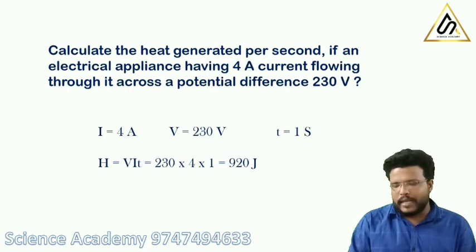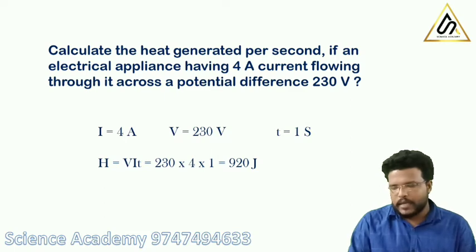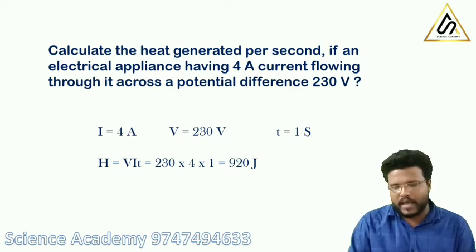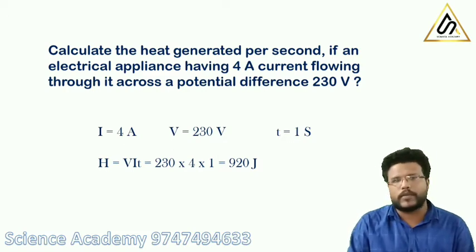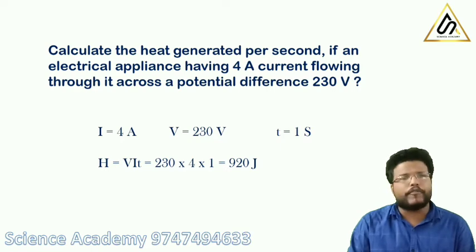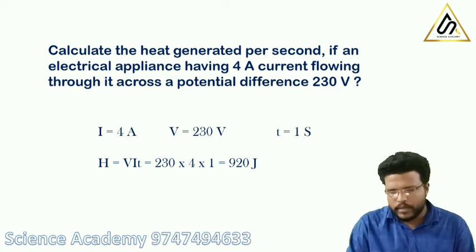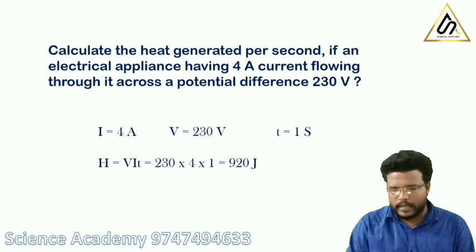Calculate the heat generated per second if an electrical appliance has 4A current flowing through it across a potential difference of 230V. The current I is 4A and the potential difference is 230V.